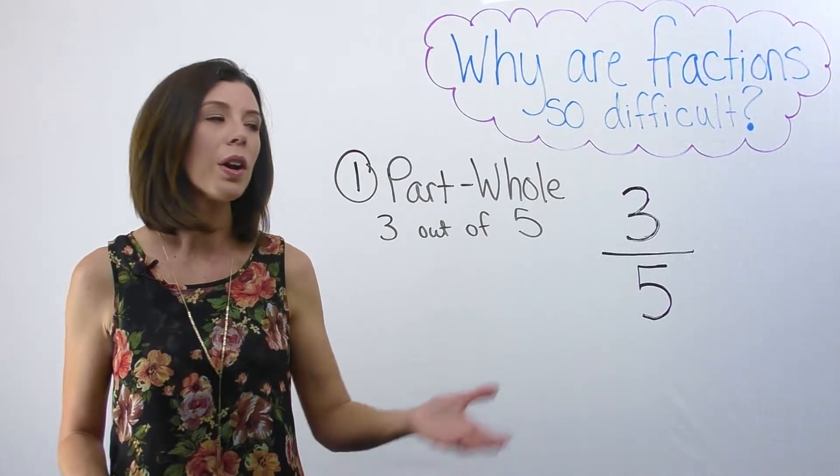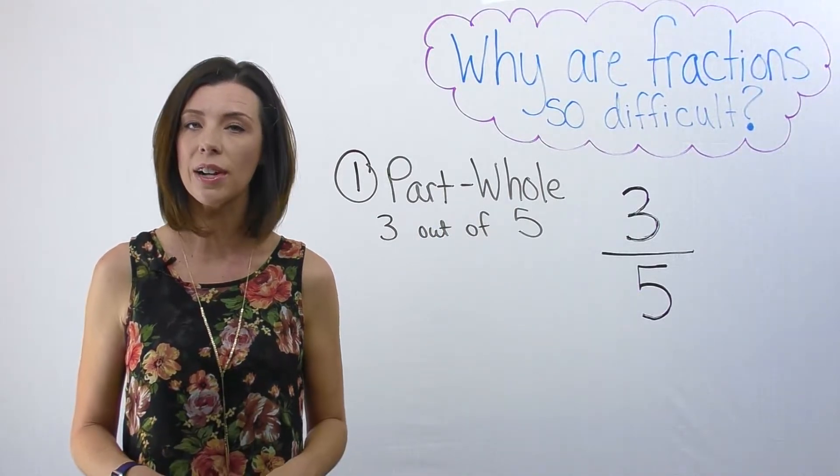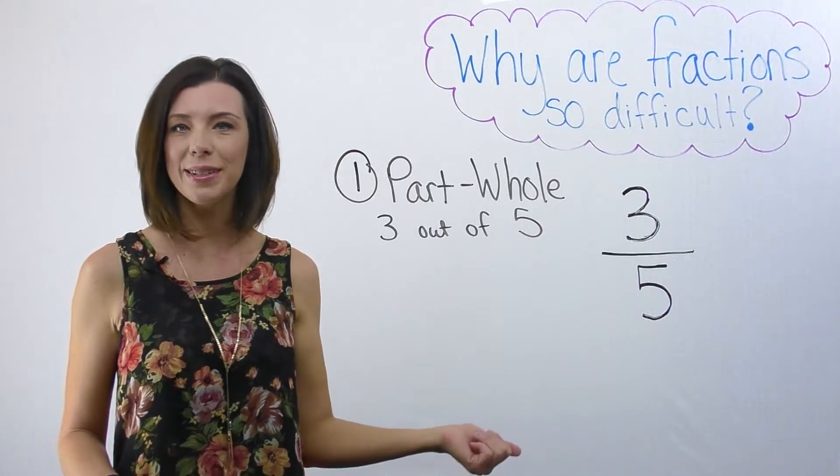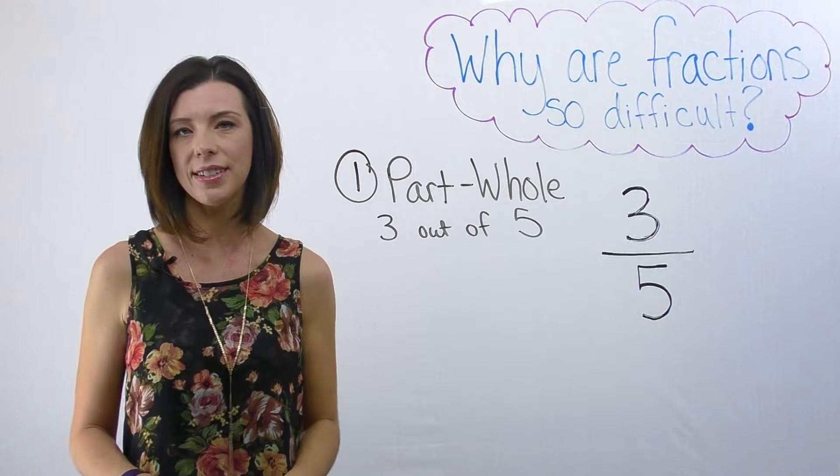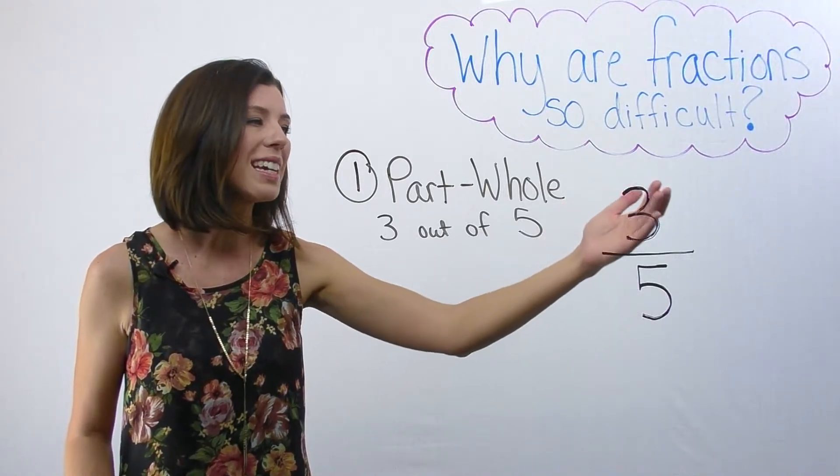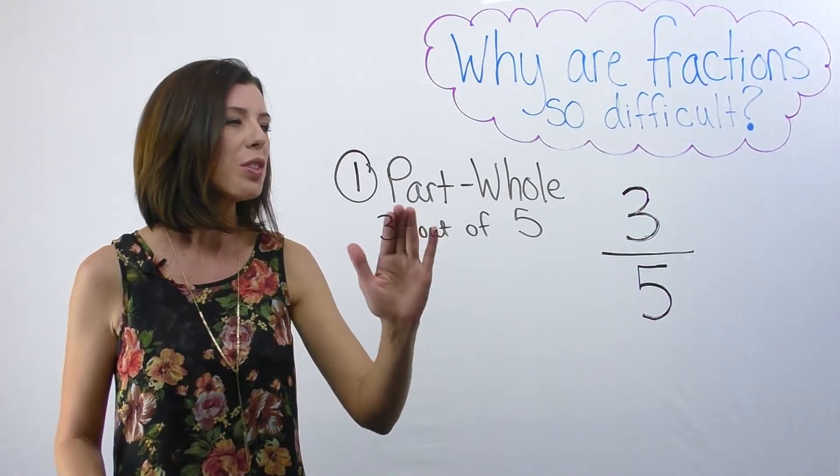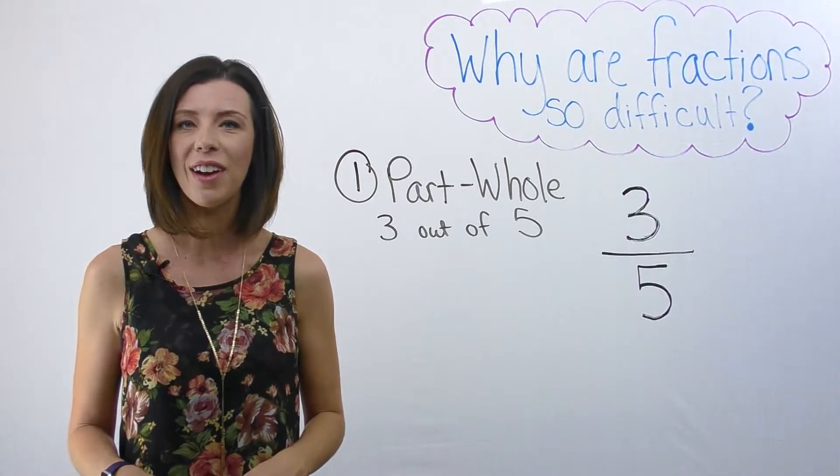This is probably one of the most common ways that we see fractions interpreted. I have three slices of pie out of my whole pie that had five slices. I could also think of this as three copies of one-fifth. So this part to whole relationship, three out of five.